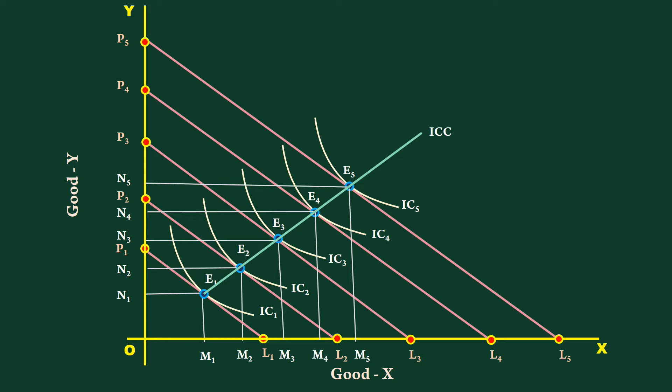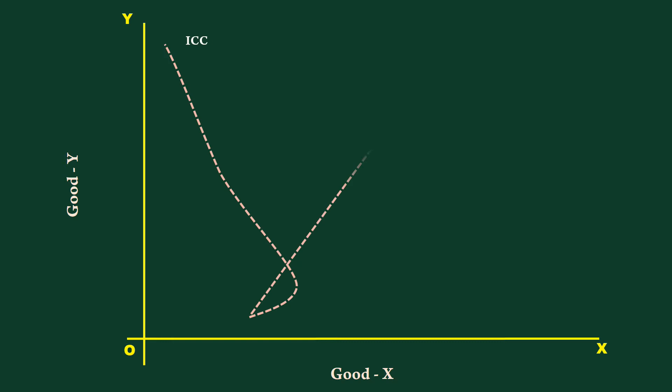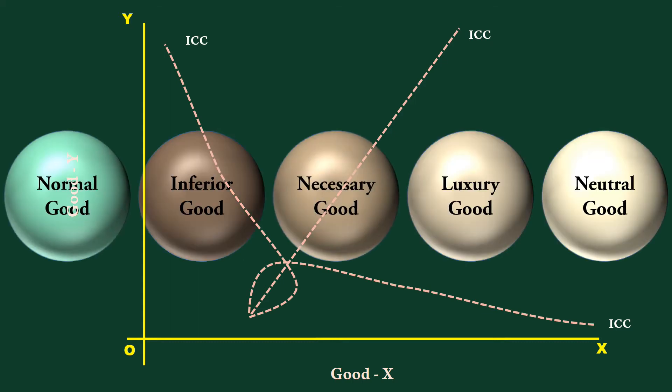But what is a normal good? You will learn subsequently. But this is not the case always. It may take different shapes. On the basis of the shapes, economists classify goods as normal, inferior, necessary, luxury and neutral. We shall see them in some detail in this lesson and in the lessons that follow.